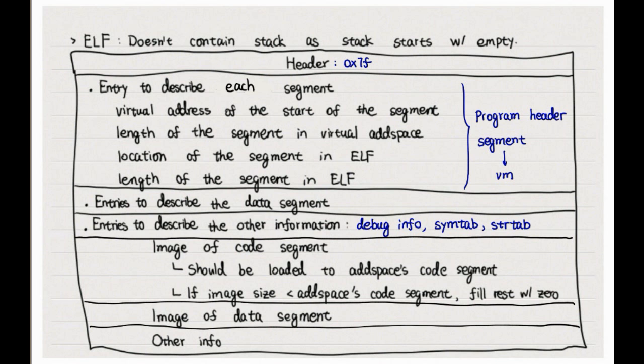The images of the code and data segments are to be loaded into the address space code and data segments respectively. If the image size is smaller than the segment size, the rest of the segment is zero filled.